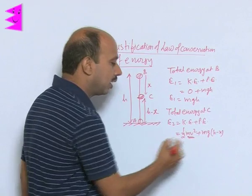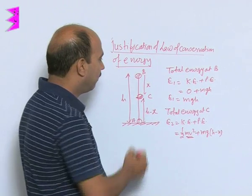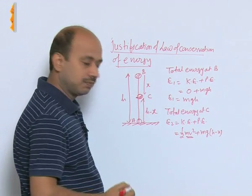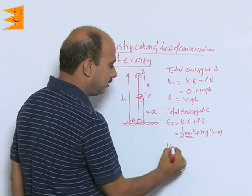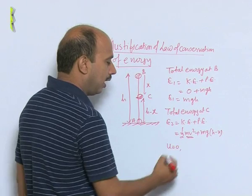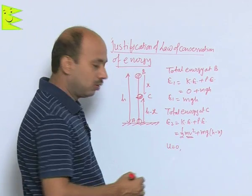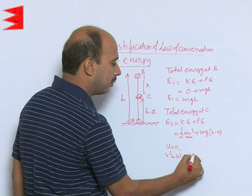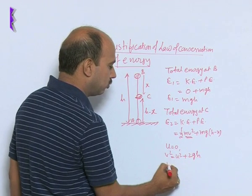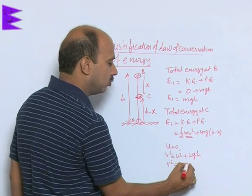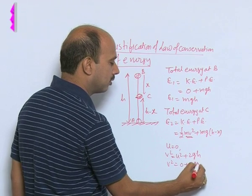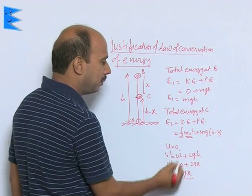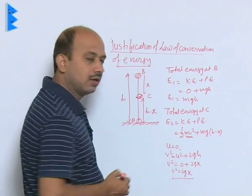Now we will have to calculate kinetic energy, so first we have to calculate V. The object is falling from B to C, so we can write initial velocity as 0. Applying V squared equals U squared plus 2gh, we get V squared equals 0 plus 2gx. So V squared equals 2gx. We will replace this value of V squared.